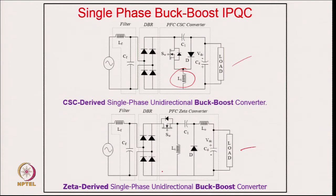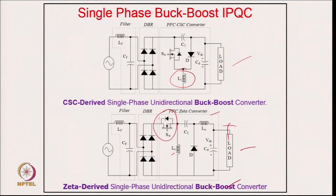The Zeta derived buck-boost converter has the same number of elements as the CUK/SEPIC. One drawback is that the device is in series so input current is discontinuous, requiring an EMI filter whose size will increase. However, one major benefit compared to other topologies is that the output polarity is not reversed. Selection depends on the relative merits and limitations of each topology.